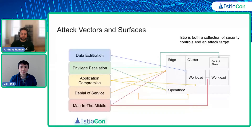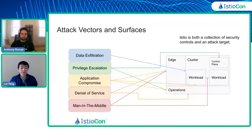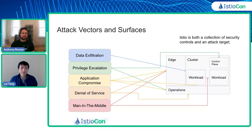Istio is not only a collection of controls, but since it lives in the cluster and represents objects within that cluster, it is an attack surface itself. When you're thinking about securing an environment with Istio, it's important to keep in mind that when you're installing Istio, it looks just like the rest of the objects around it in Kubernetes, and you need to treat those objects as attack surfaces themselves.